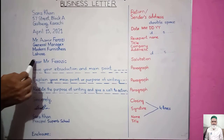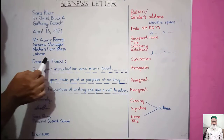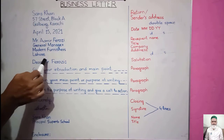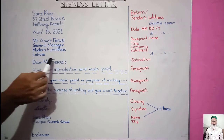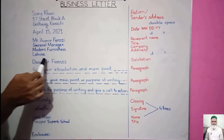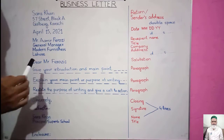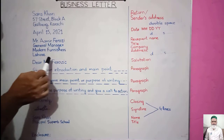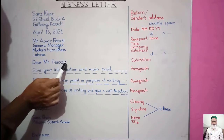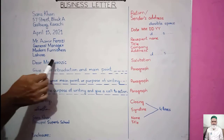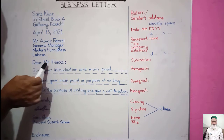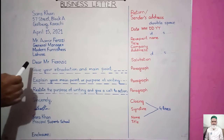In the salutation, for example: 'Dear Mr. Ferozy.' Keep in mind the title — do not omit it. If it's 'Mr.' then write 'Mr.', if it's 'Miss' then write 'Miss.' If you know the complete name, you can write the full name. An important point is that at the end of the salutation, a comma is never used — instead, a colon is used. After the salutation, there is again double spacing — leave one line — and then the first paragraph is written.